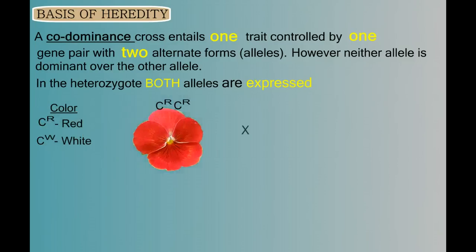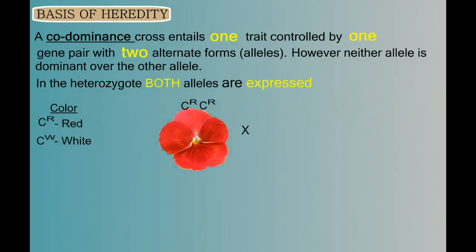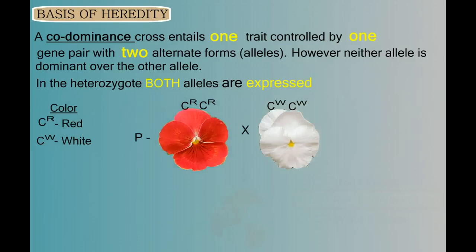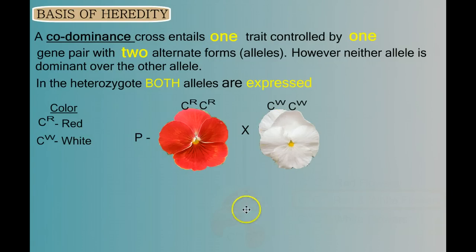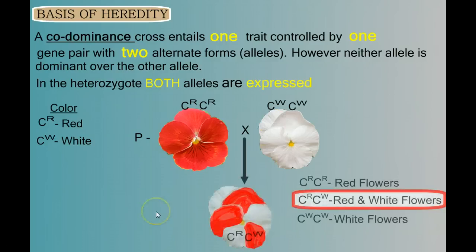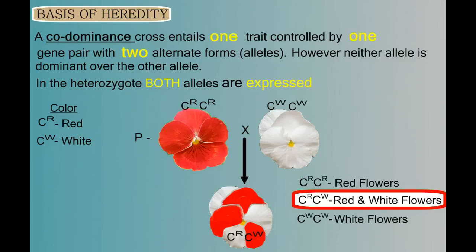So again, when we cross our homozygous red flower with our homozygous white flower, think about what the heterozygote offspring will look like. Will they all be red? Will they all be white? Will they be pink? Well, this is codominance, so both are expressed, and we have a flower that's both red and white — codominance.